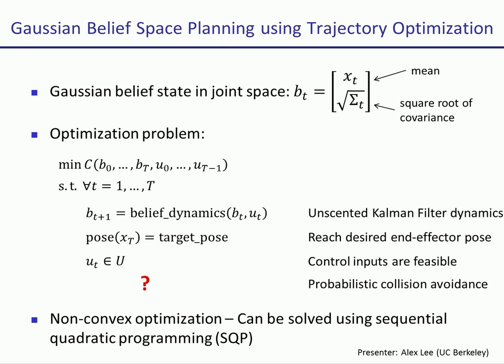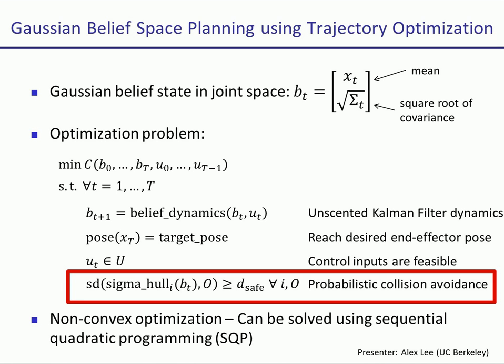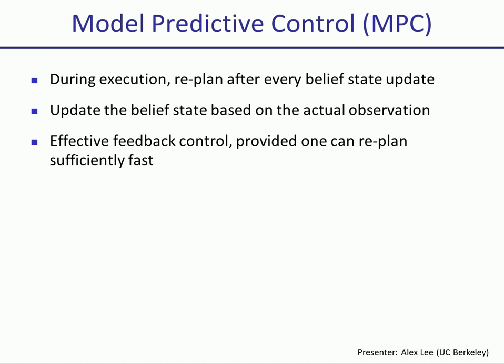Now let's go back to the optimization problem presented earlier. For the probabilistic collision avoidance constraint, we now require that the signed distance between sigma hulls and obstacles is greater than or equal to some safety distance. In addition, we can do model predictive control during execution, in which we replan at every time step and update the belief state based on the actual observation rather than the maximum likelihood observation. Given that we can replan sufficiently fast, this is an effective feedback controller.